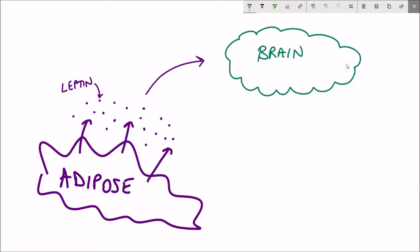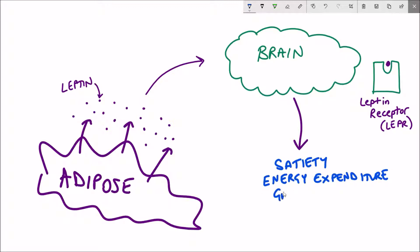One of these, which I mentioned last time, is leptin, the hormone secreted from adipose tissue. Through binding to its receptor in the brain, it stimulates energy expenditure and reduces the desire for further food intake. But what is this mysterious signaling process?